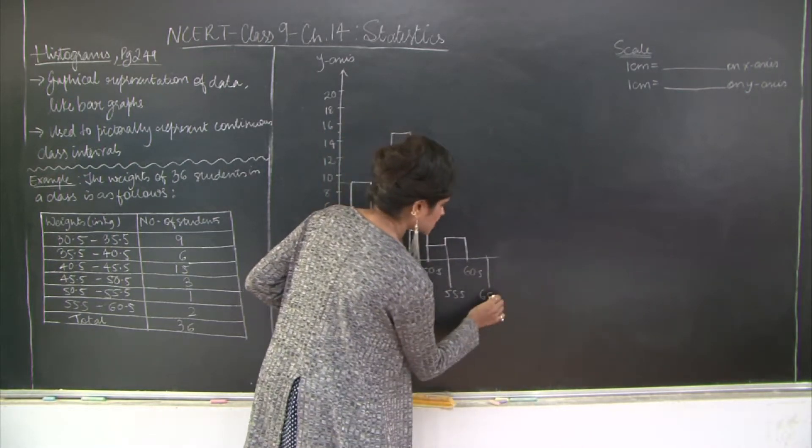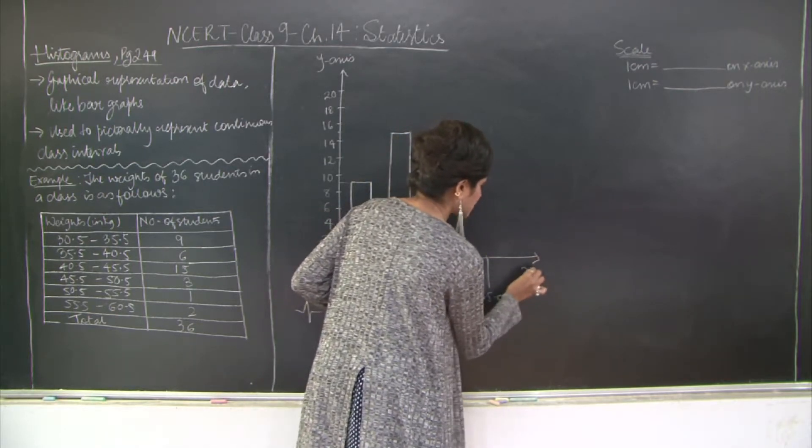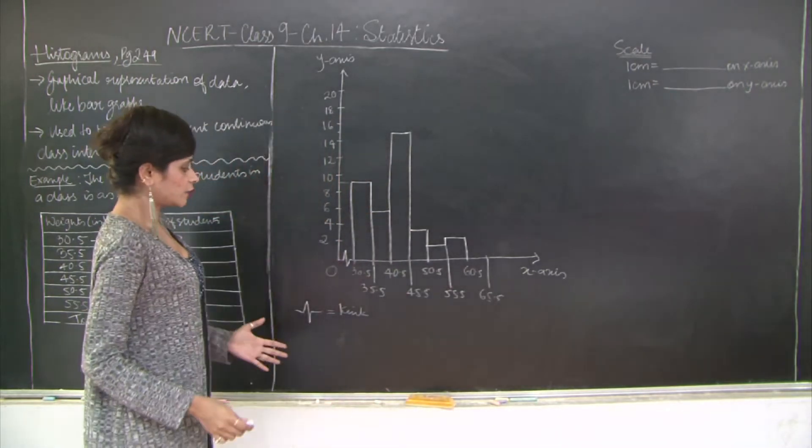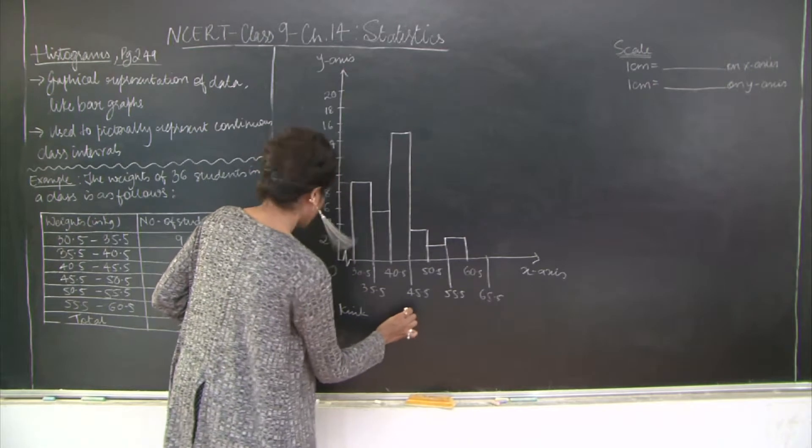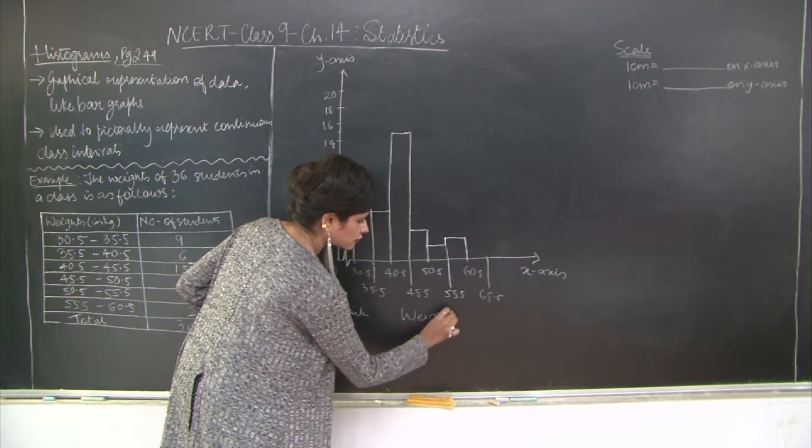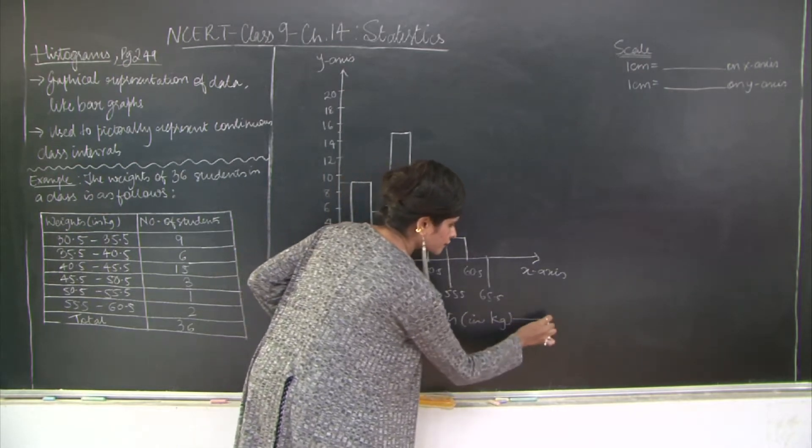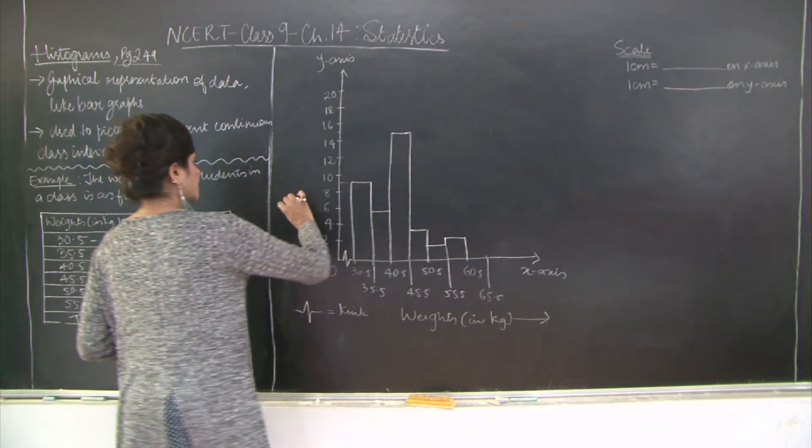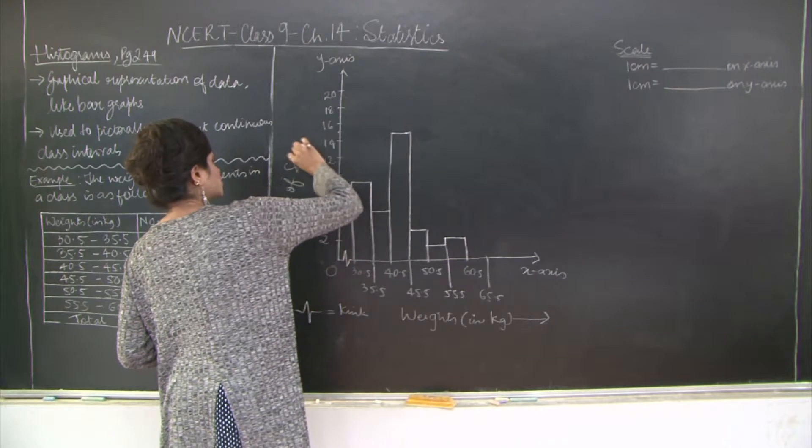This is 65.5. This is your x-axis. Let's label the x and y axis. The x-axis is weights in kilogram, and the y-axis is the number of students.